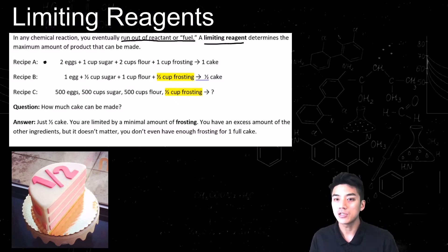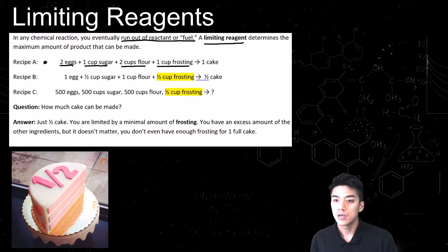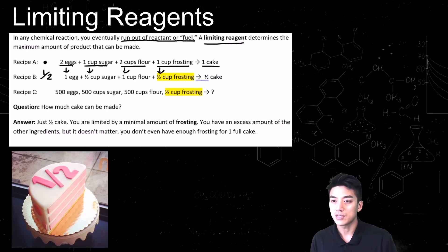The limiting reagent determines the maximum amount of product that can be made. We're going to revisit recipe A here. Recipe A allows you to make one cake. Now recipe B — you can see that you have half the starting amount of ingredients as A, so that means you can make just half a cake. And that's pretty obvious.